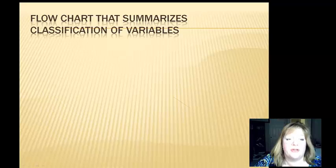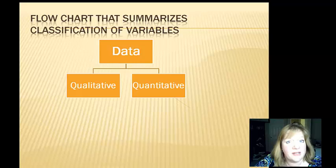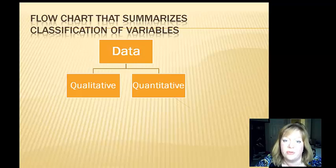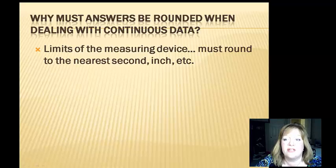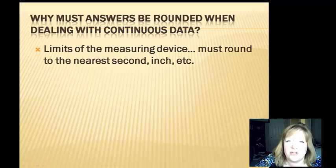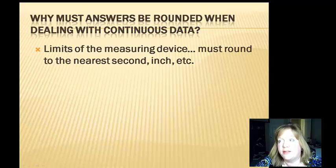Here's a flowchart that summarizes the classification of variables. You start with your data, which is just a collection of your samples. The data can either be qualitative or quantitative. Qualitative is some type of quality. Quantitative are numbers, and those numbers can be categorized as discrete or continuous. Discrete are the whole numbers; continuous are the decimals and fractions. Answers must be rounded when dealing with continuous data because when measuring something, it falls between two tick marks — limited by your measuring device, your ruler, stopwatch, or thermometer.